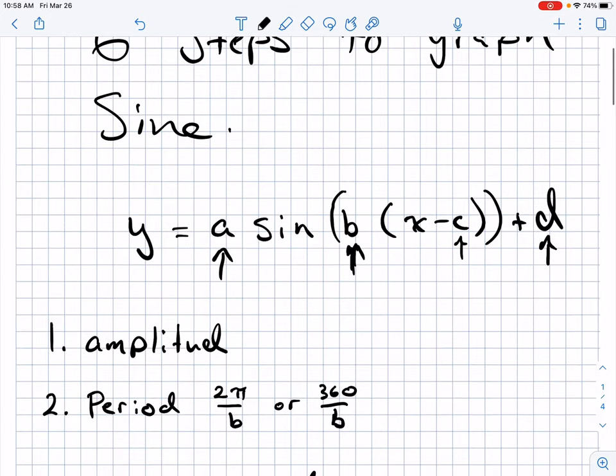The amplitude is found by a. Amplitude tells us how high above the midline and how far below the middle of the graph this will go. So we use a for amplitude.